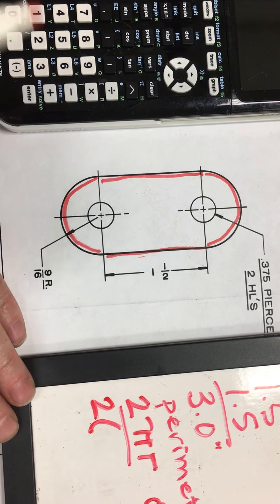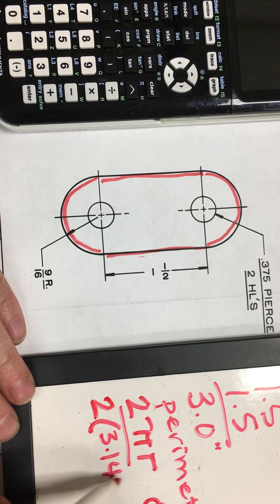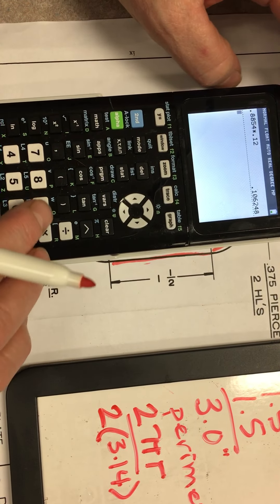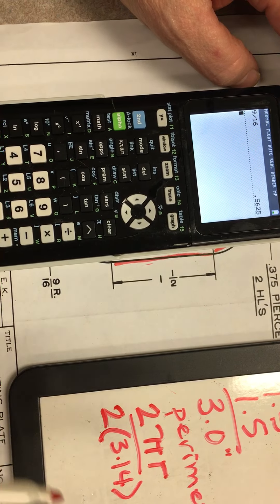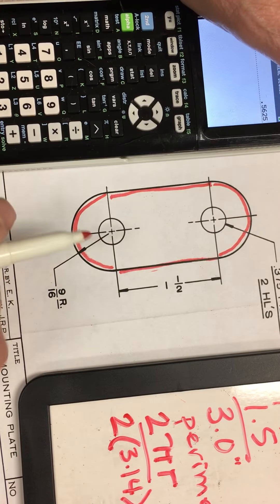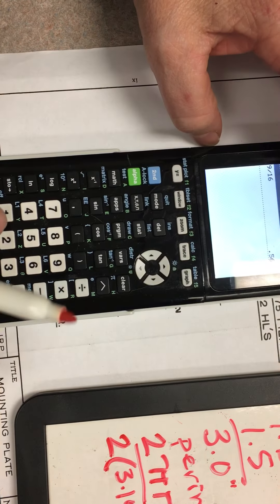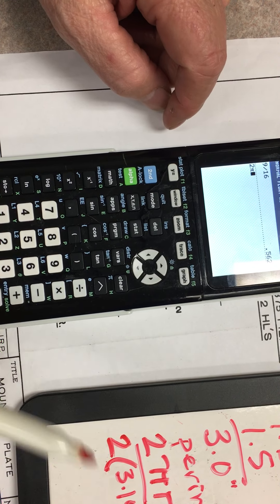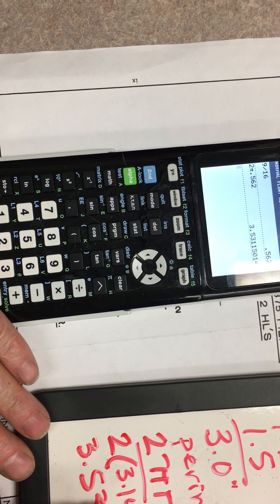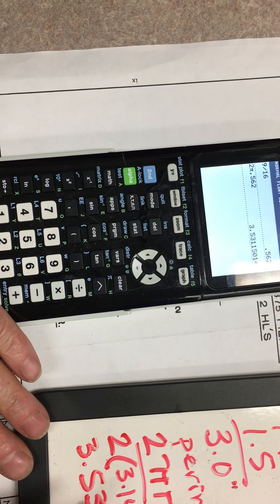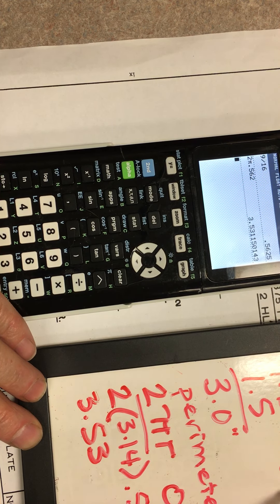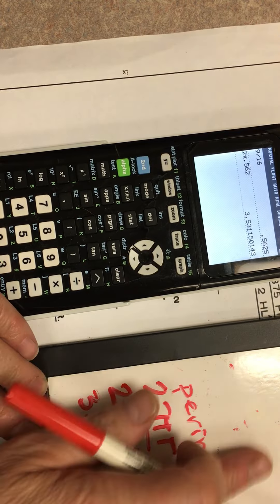We will multiply 2 times pi. I will use the pi button on my calculator, but you can also use 3.14. Then the radius, let's convert it to a decimal. We can say 9 divided by 16 is 0.562. That is the radius. In order to get the perimeter of this circle, I will say 2 times pi times 0.562. I get 3.53. We have 3 inches and 3.53. I have 6.53 inches so far.